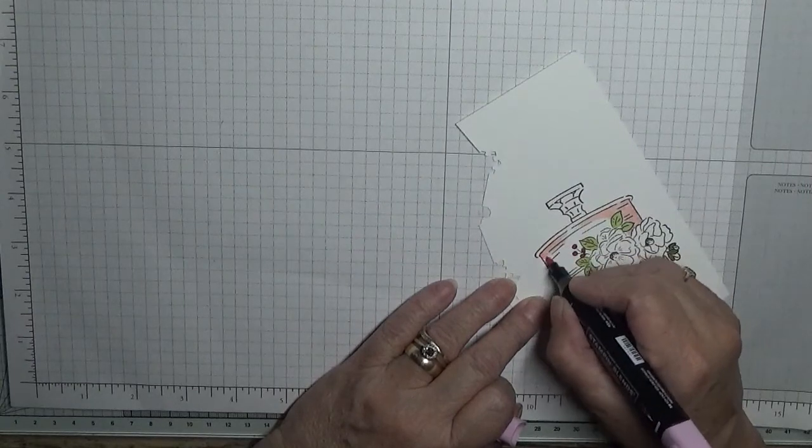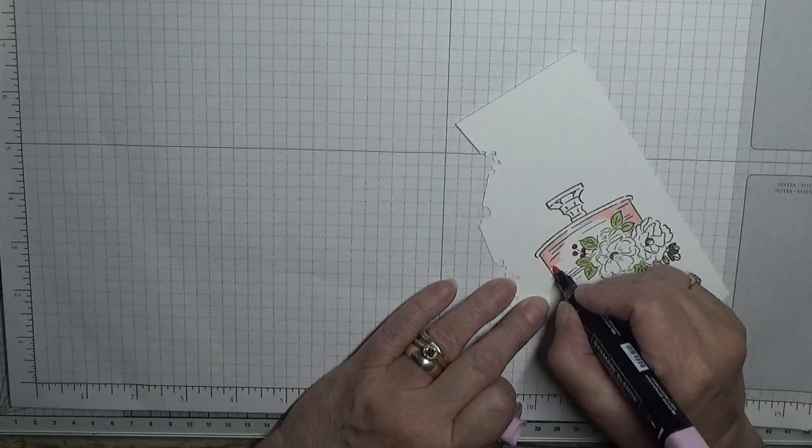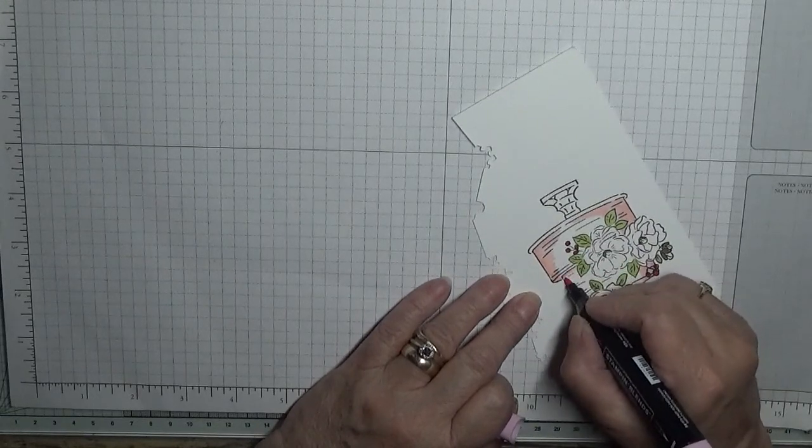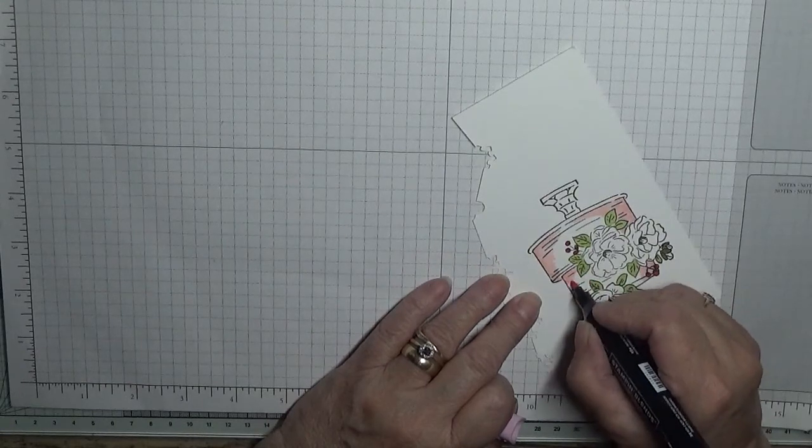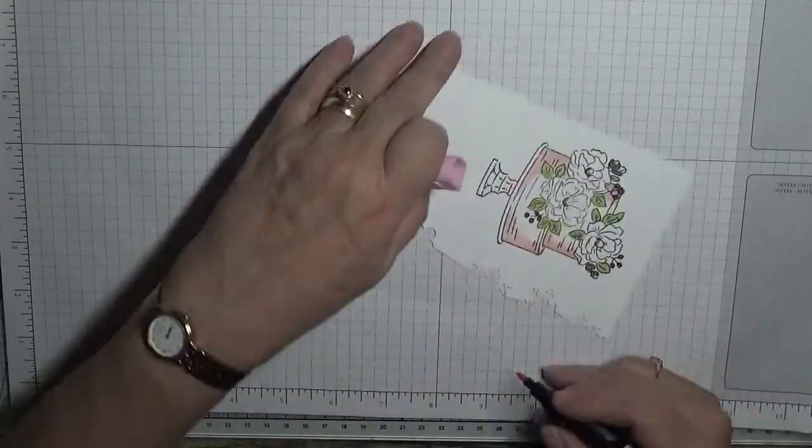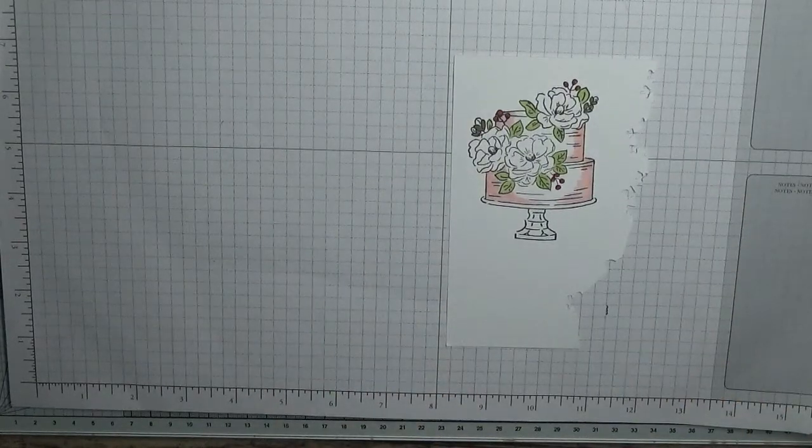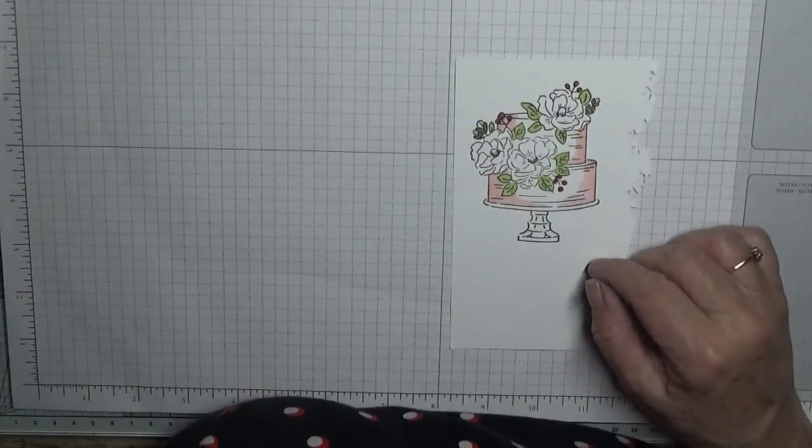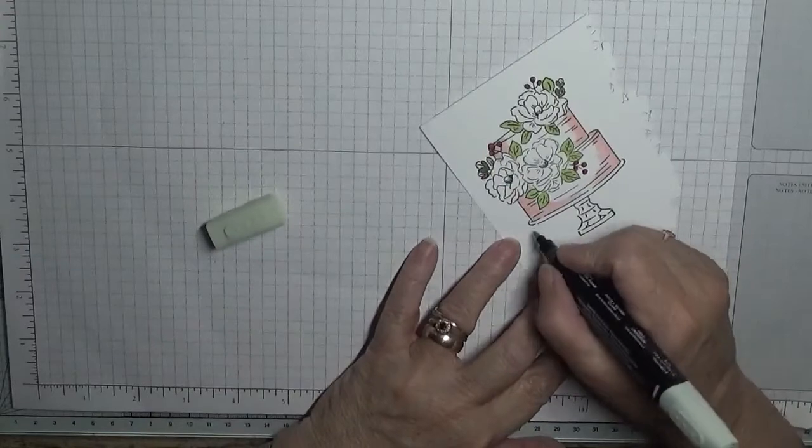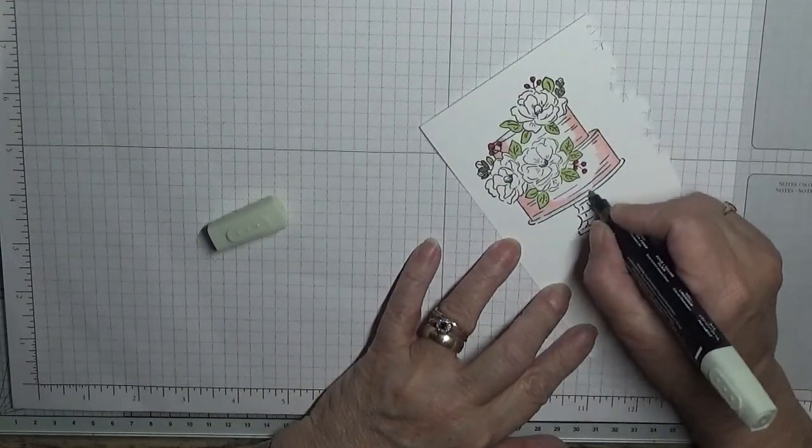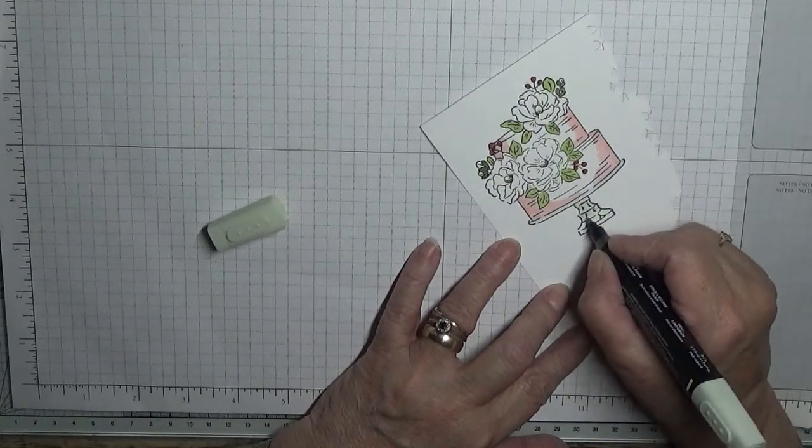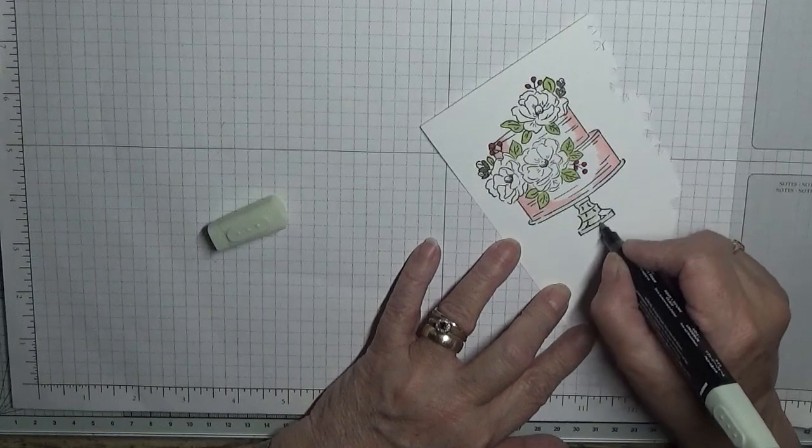And then see Lemon Lime Twist. That's all I did with the cake edge. Which one's Light? Right, Light Soft Seafoam. It's what I've done the cake stand. Makes it look like glass.